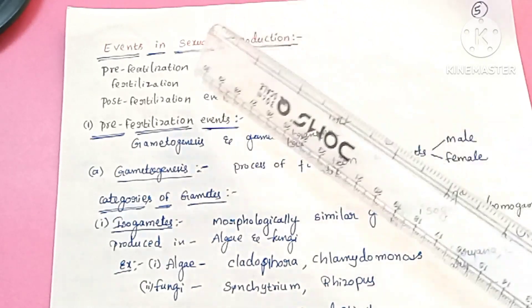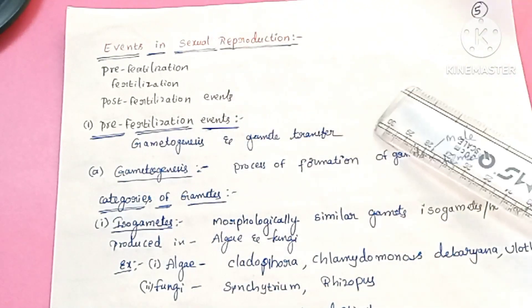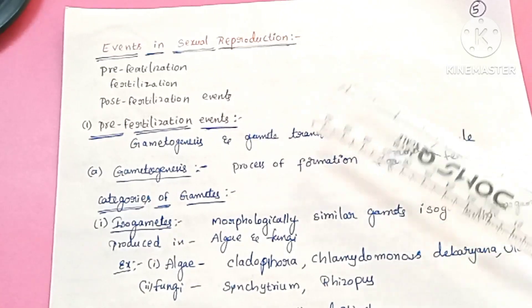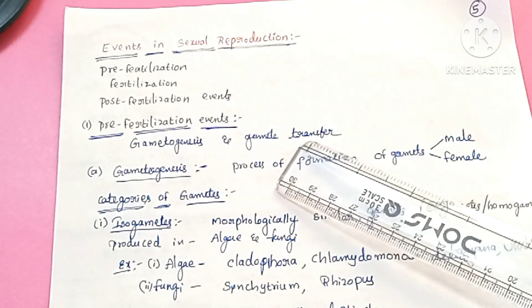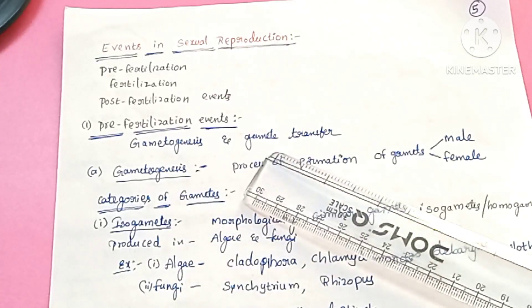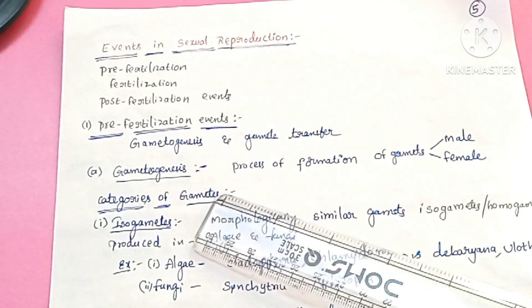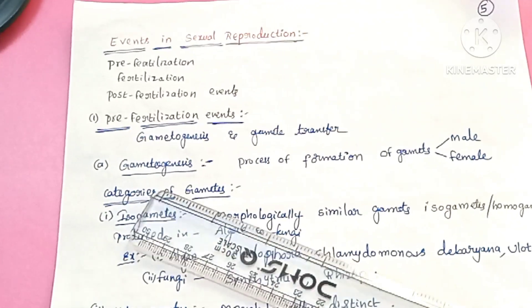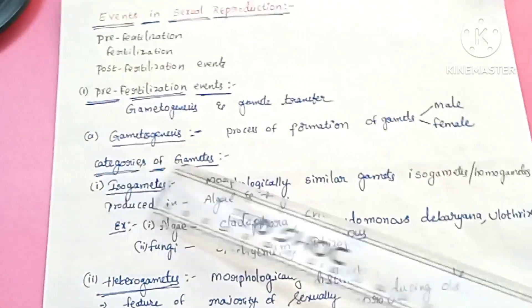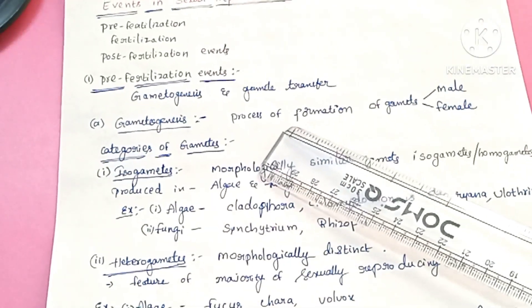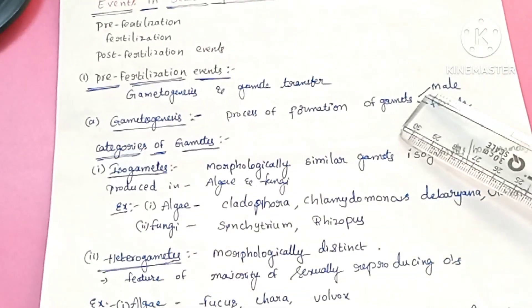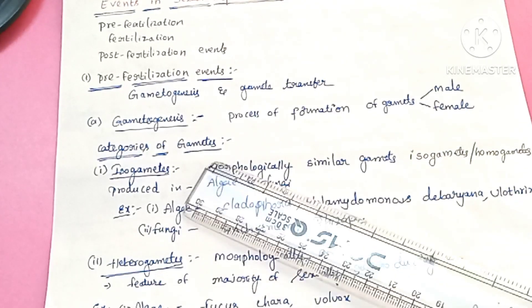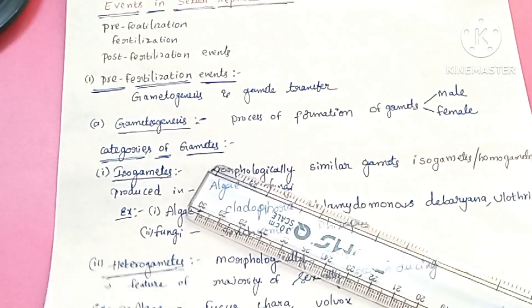Pre-fertilization events occur prior to fertilization and have two steps: gametogenesis and gamete transfer. Gametogenesis is the process of formation of gametes — male gametes and female gametes.